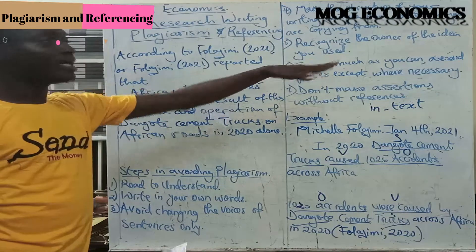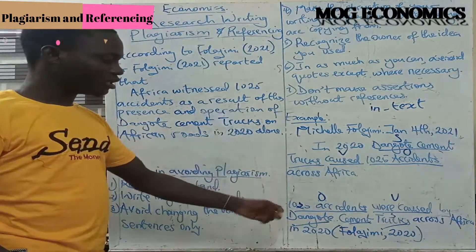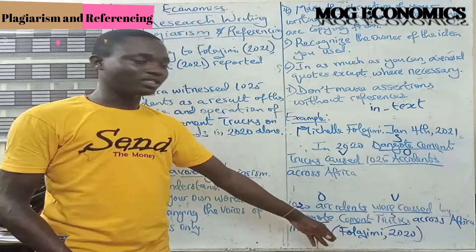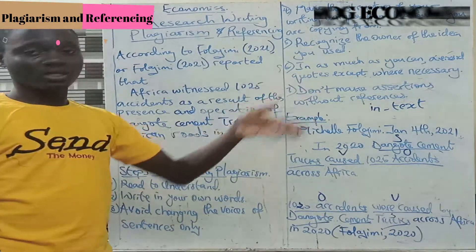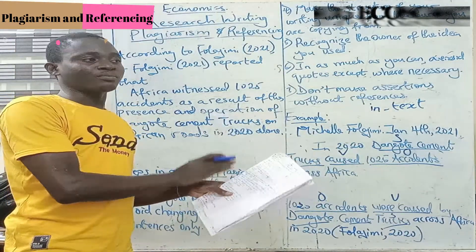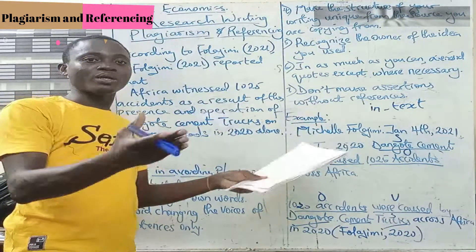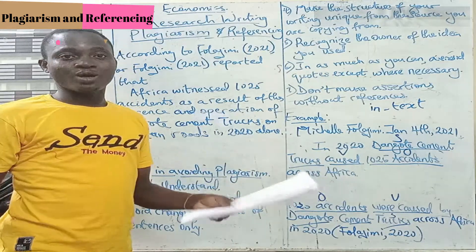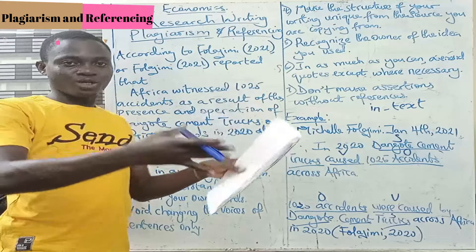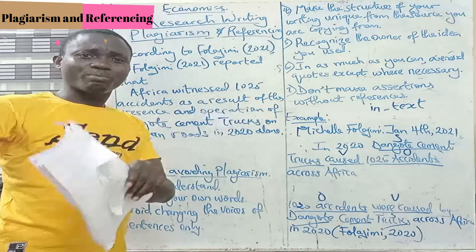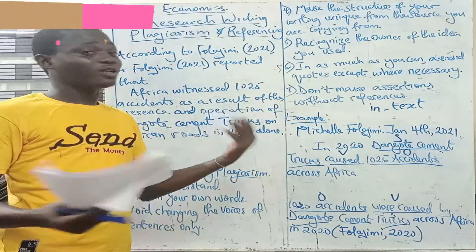Number six: always recognize the owner of the idea you used. If you got this idea from Folajimi's writing somewhere, you recognized Folajimi — but all you did was change from active voice to passive voice. That's not enough. In as much as you can, avoid quotes except where necessary. The more quotes you have, the higher your plagiarism count, because quotes have to be picked exactly the way the person made them. It's better to paraphrase than to pick someone's exact quotes, because that may not help you.